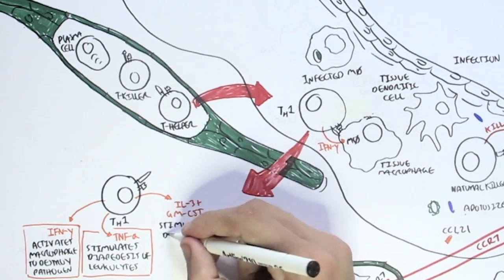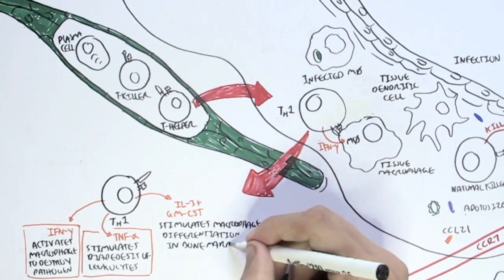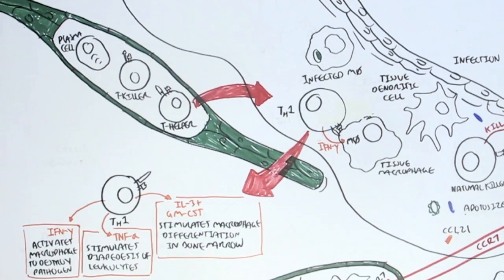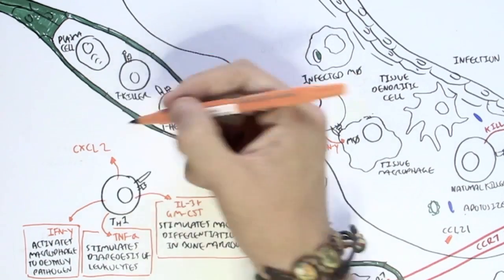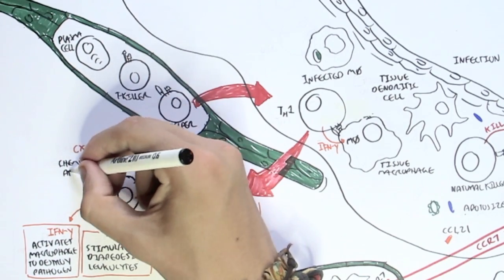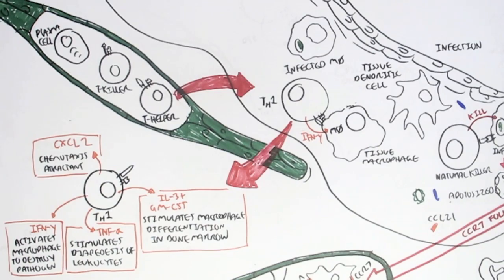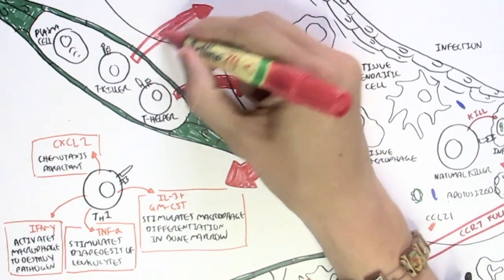T helper 1 also secretes interleukin-3 and GM-CSF, which stimulates macrophage differentiation in the bone marrow, so it allows bone marrow to produce more macrophages, or monocytes in this case. T helper 1 also secretes a chemokine CXCL2, which is a chemotaxis attractant. So this chemo-attractant will attract more leukocytes into the area.